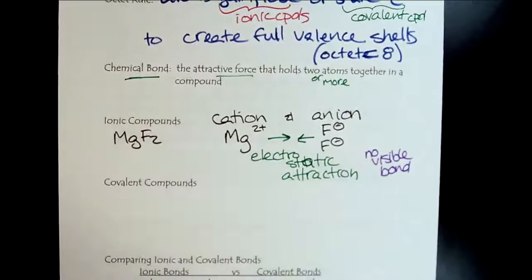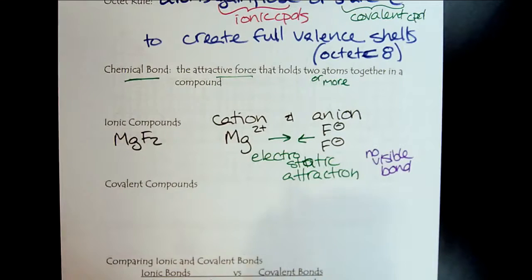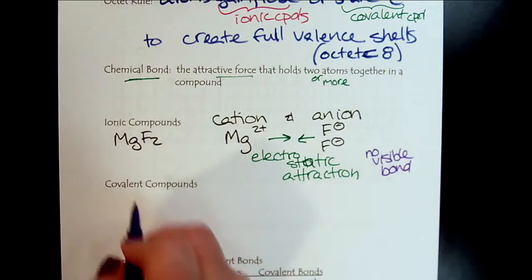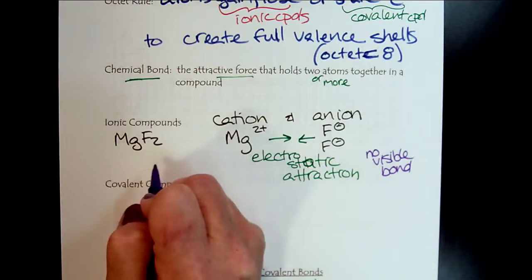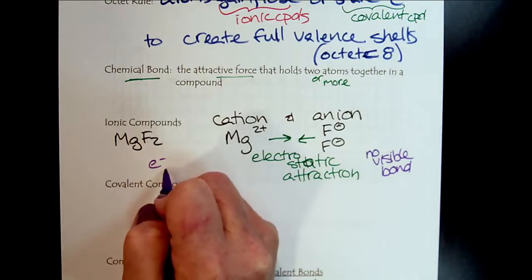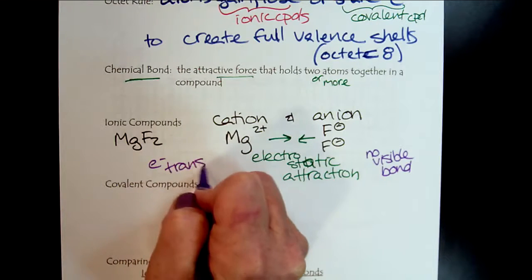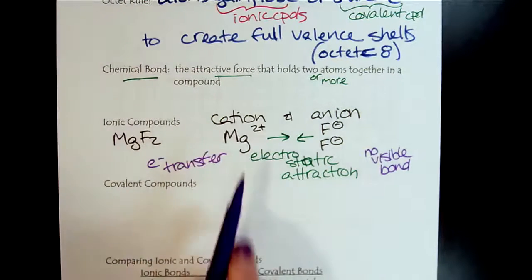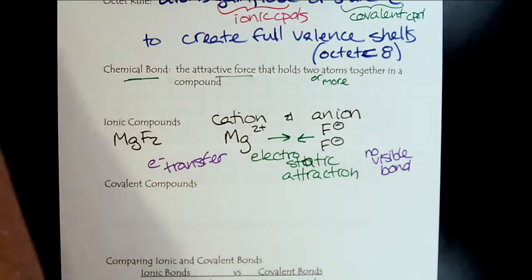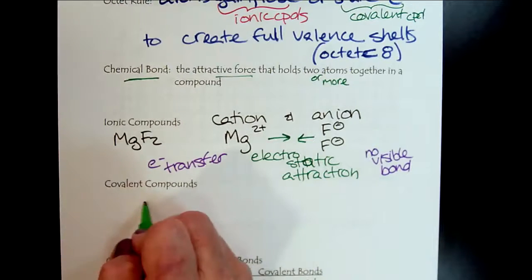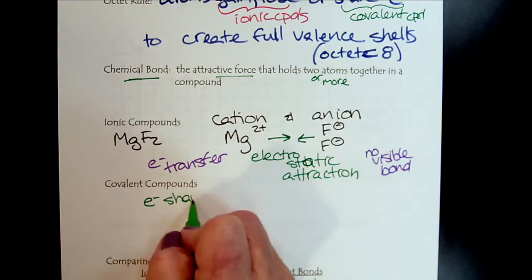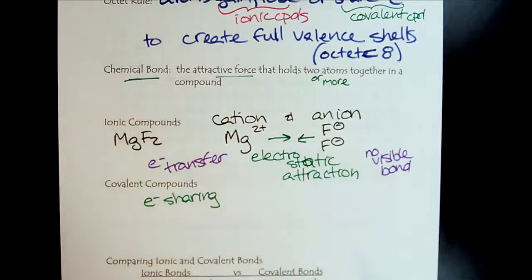With covalent compounds, so that would be here. So this was electron transfer for ionic, lost and gained. For covalent, it's electron sharing. And so that's the covalent bond. We'll just do a very simple hydrogen H2.